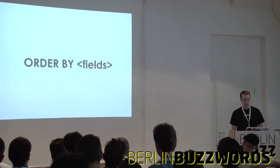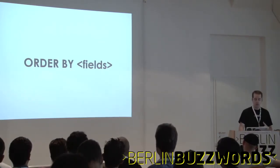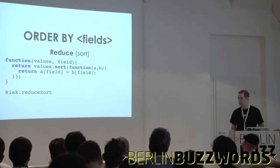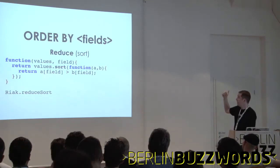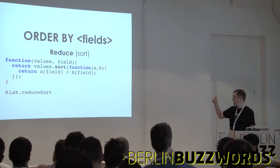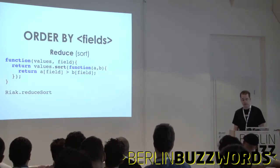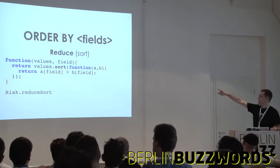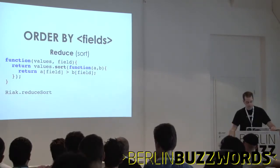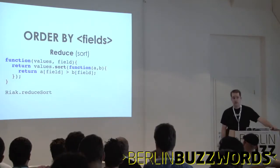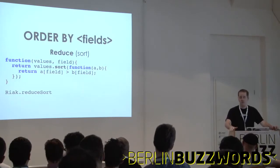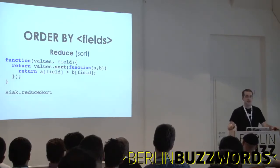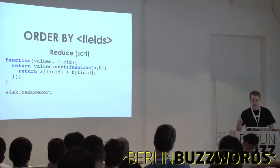For ORDER BY: in Riak MapReduce you do this with a reduce phase. Reduce phases take a list of values as the first argument; the second argument is phase-specific data. You pass which field to sort on, then return values.sort() in JavaScript with a comparator function. There's a built-in function called riak.reduceSort. Be careful: JavaScript will sort lexically by default, even across numbers — so you want to pass a comparator function. If you pass it as a string in the arg, it gets evaluated into the sort.